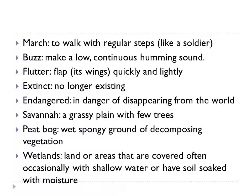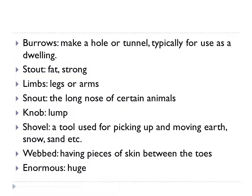Peat bog — wet, spongy ground of decomposing vegetation. Then wetlands — land areas that are covered often or occasionally with shallow water or have soil soaked with moisture. Then burrow — to make a hole or tunnel typically for use as a dwelling. If the word is burrow as a noun, it is a hole or tunnel used as a dwelling. Then stout — fat or strong.